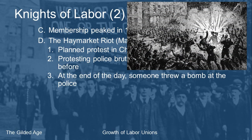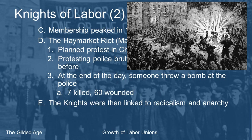The Knights of Labor decided to hold a protest in downtown Chicago to protest the brutality against those strikers. The protest lasted all day and was mostly peaceful. By around 10 o'clock at night most protesters had gone home, but some remained. As police moved in to clear the street, someone from the crowd threw a bomb — and not a small homemade device: seven police officers were killed and sixty were wounded.